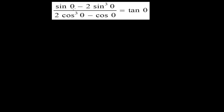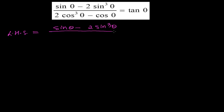Welcome friends, once again to another trigonometric identity proving problem. Here we have to show the left hand side and right hand side as equal. To prove that, let me first solve the left hand side because it's looking bigger, and solving the bigger one to form a smaller one is easier. So I am solving the left hand side: sin θ minus 2 sin³θ, whole divided by 2 cos³θ minus cos θ.